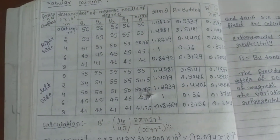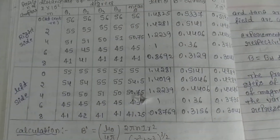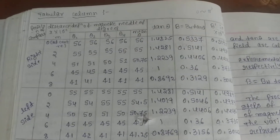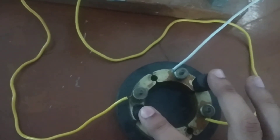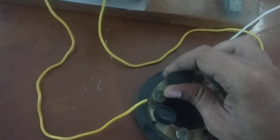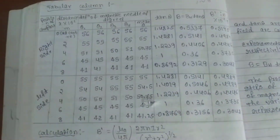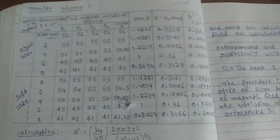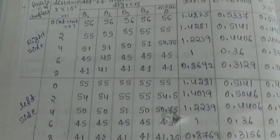By moving for each 2 cm difference on both sides, you have to observe deflections θ1, θ2, θ3, and θ4. These deflections are taken using the commutator key. θ1 and θ2 are recorded first; then by changing the position of the keys, θ3 and θ4 are obtained. These deflections can be observed in the compass. By taking deflections for each distance along both the right and left sides of the circular coil, you get four different theta values.